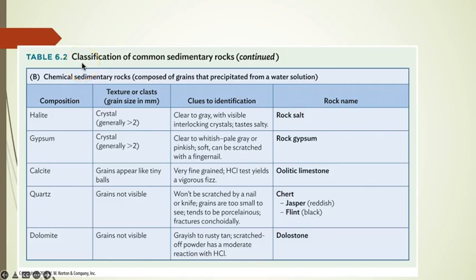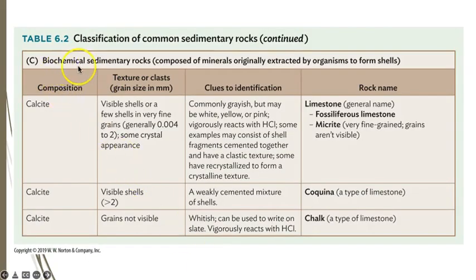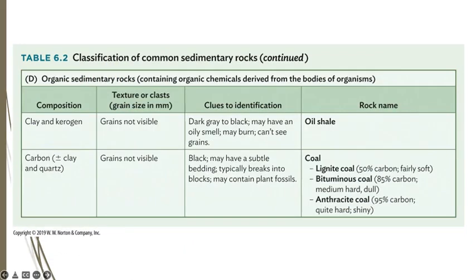This chart organizes common chemical sedimentary rocks by composition. Biochemical sedimentary rocks are most commonly forms of limestone and often contain fossils. Organic sedimentary rocks are composed of organic matter like carbon, and result in making the material used in energy production, like oil shale and coal.